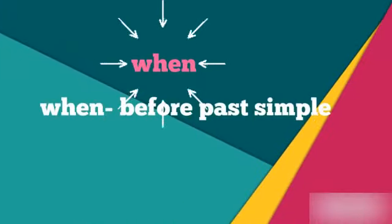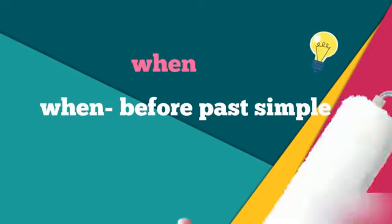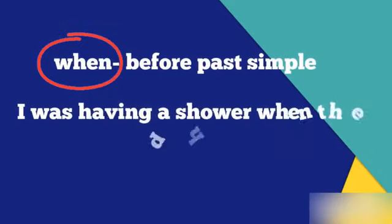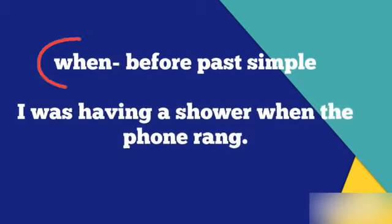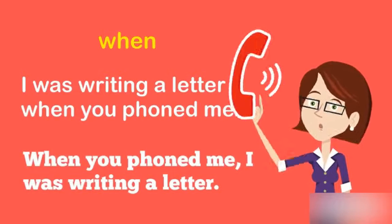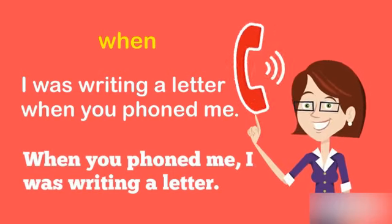We use 'when' with the past simple, and it is placed before the past simple tense. Now let's go over some examples with 'when'. I was having a shower when the phone rang. I was writing a letter when you phoned me — or: when you phoned me, I was writing a letter.